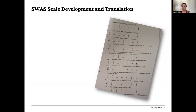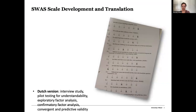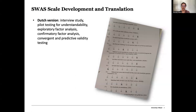When we originally developed the StoryWorld Absorption Scale, it was in Dutch. We took great care to develop items that were similar to real readers' expressions, using interviews with Dutch readers. Our list of developed items underwent pilot testing, after which we removed some difficult-to-understand items. The list then underwent exploratory and confirmatory factor analysis, and we were left with a satisfactory instrument of 18 items divided over four dimensions, found reliable in several different research settings.